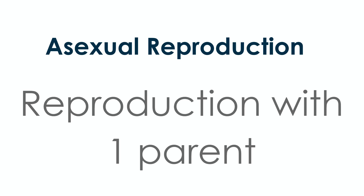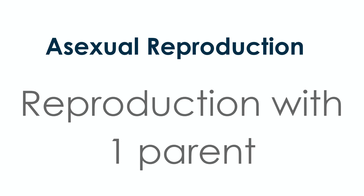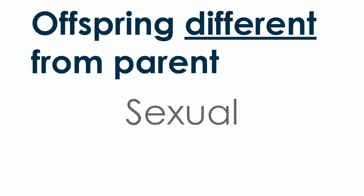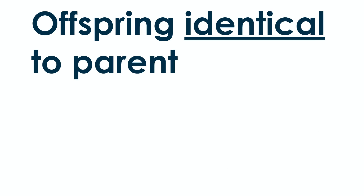There are many different ways reproduction can happen, and we're going to talk about some of those today. Sexual reproduction involves two parents; asexual involves just one. Offspring that are different from a parent — does that apply to sexual or asexual? Think about humans: we have a mom and a dad, and we don't look exactly identical to our parents because we're a mixture of two different sets of genes.